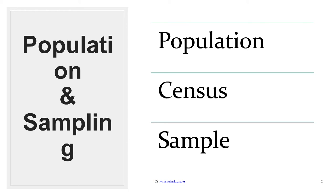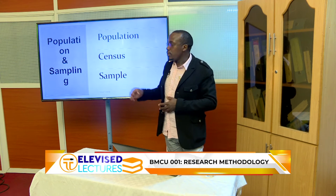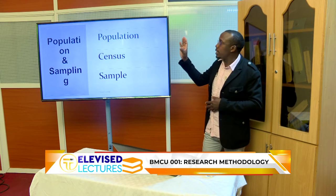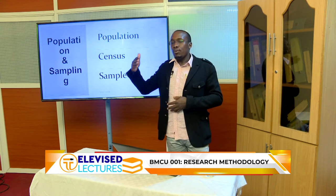Population is the total number of entities or elements in a particular unit — the entire unit of items, be it people, objects, animals, organizations, or regions. Once you identify your population, it becomes easier to decide whether you're going to carry out a census type of study or sample that population. We always assume there is no biasness, because it is impractical to always get to know all items in a population.